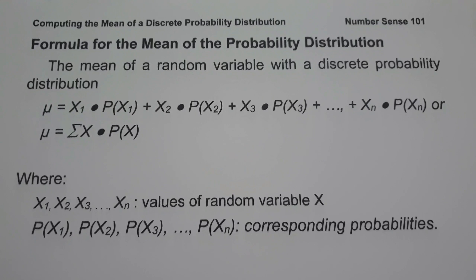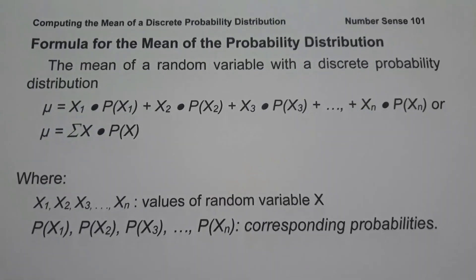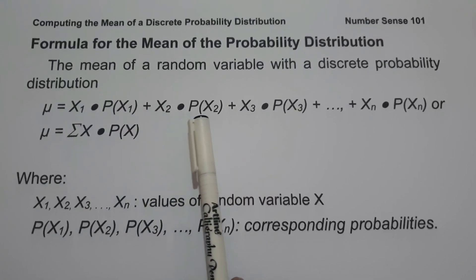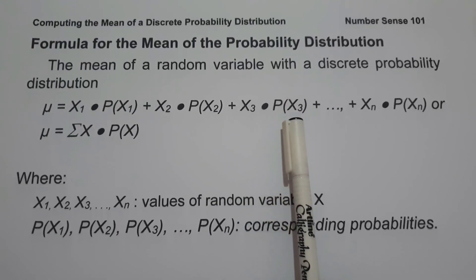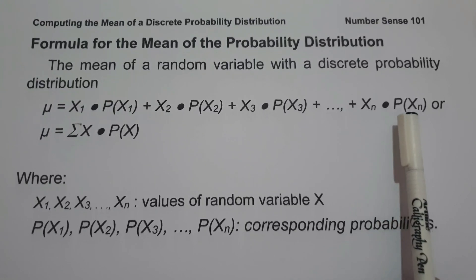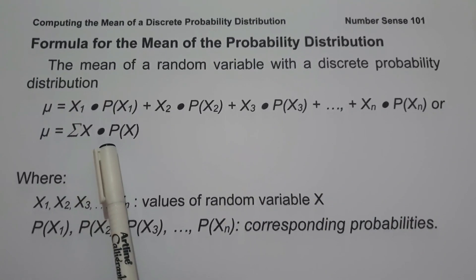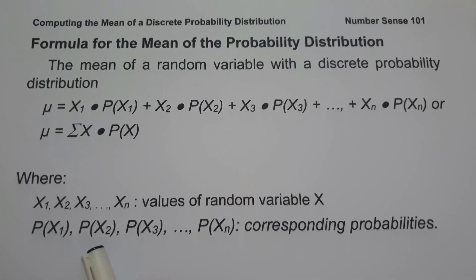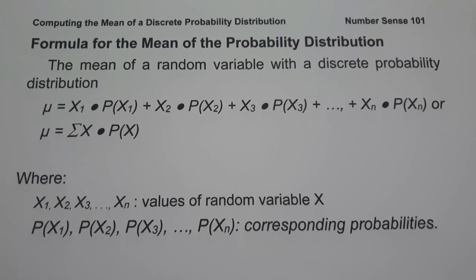For today's video, we are going to talk about how to compute for the mean of a discrete probability distribution. The mean is considered a measure of central location of a random variable. The formula is: x₁·P(x₁) + x₂·P(x₂) + x₃·P(x₃) + ... + xₙ·P(xₙ), or the summation of x multiplied by P(x), where x₁, x₂, x₃ up to xₙ are the values of the random variable and P(x₁), P(x₂) up to P(xₙ) are the corresponding probabilities.